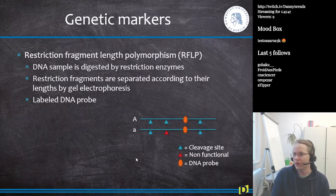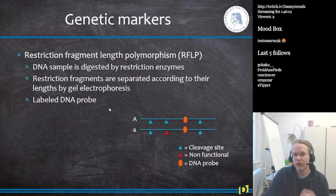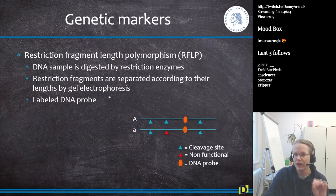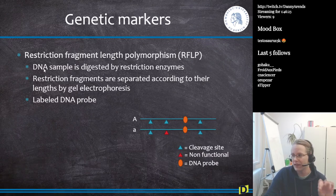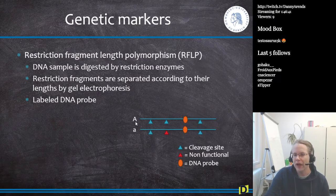We need the ability to measure which part of the genome came from which parent. Originally in the 1980s, we used restriction enzymes — restriction fragment length polymorphisms (RFLPs). We take DNA from an individual and digest it with restriction enzymes. The restriction fragments are separated by length via gel electrophoresis, using a labeled DNA probe. For example, big A is the chromosome from the father, small a from the mother.